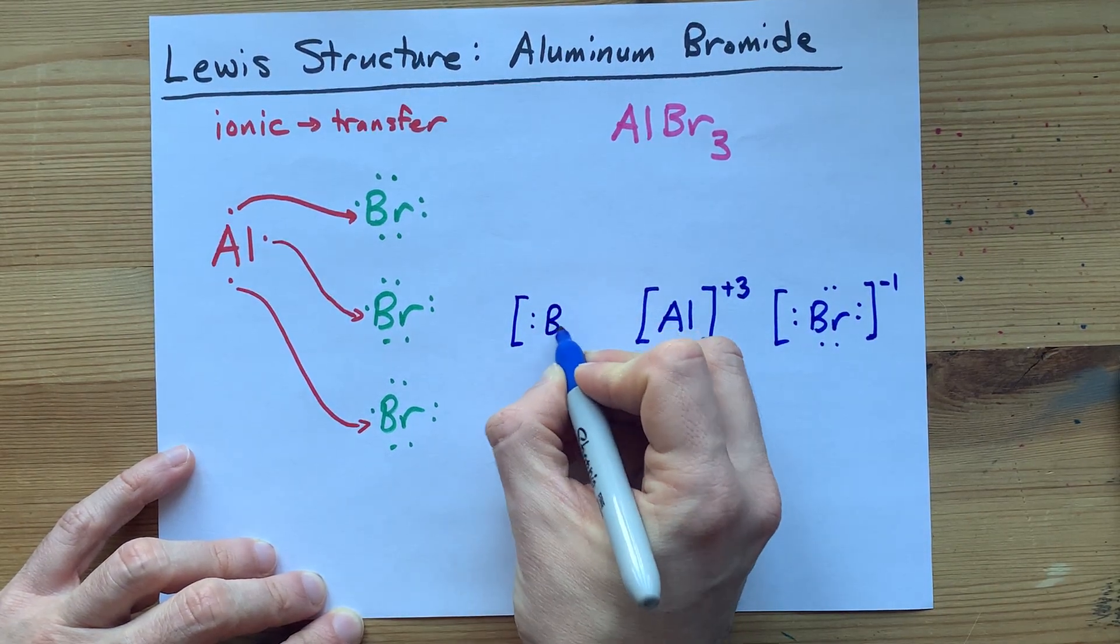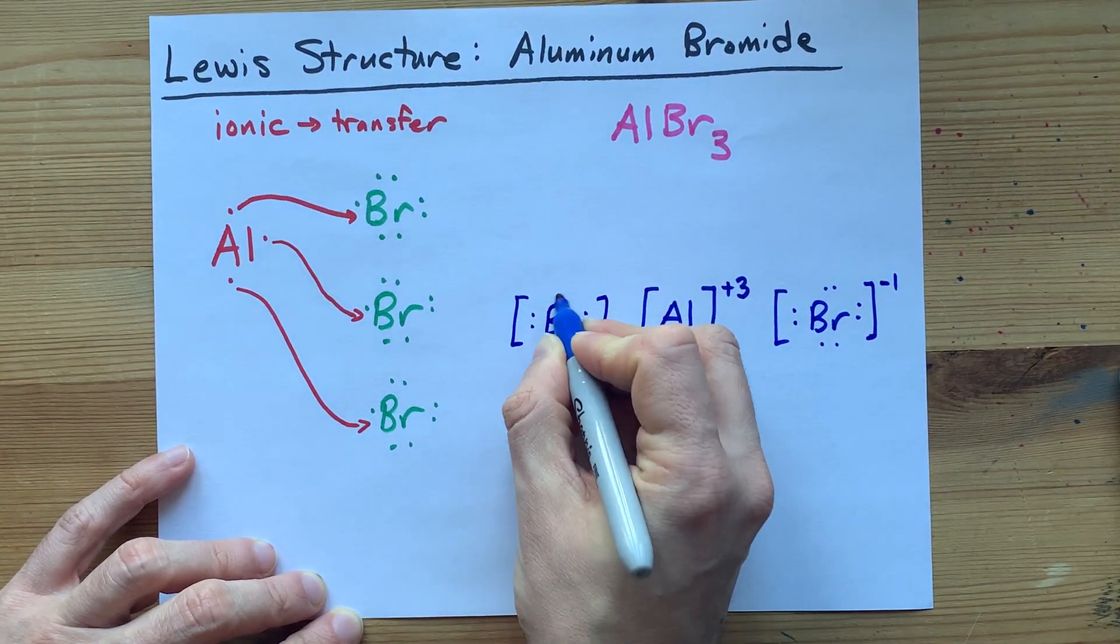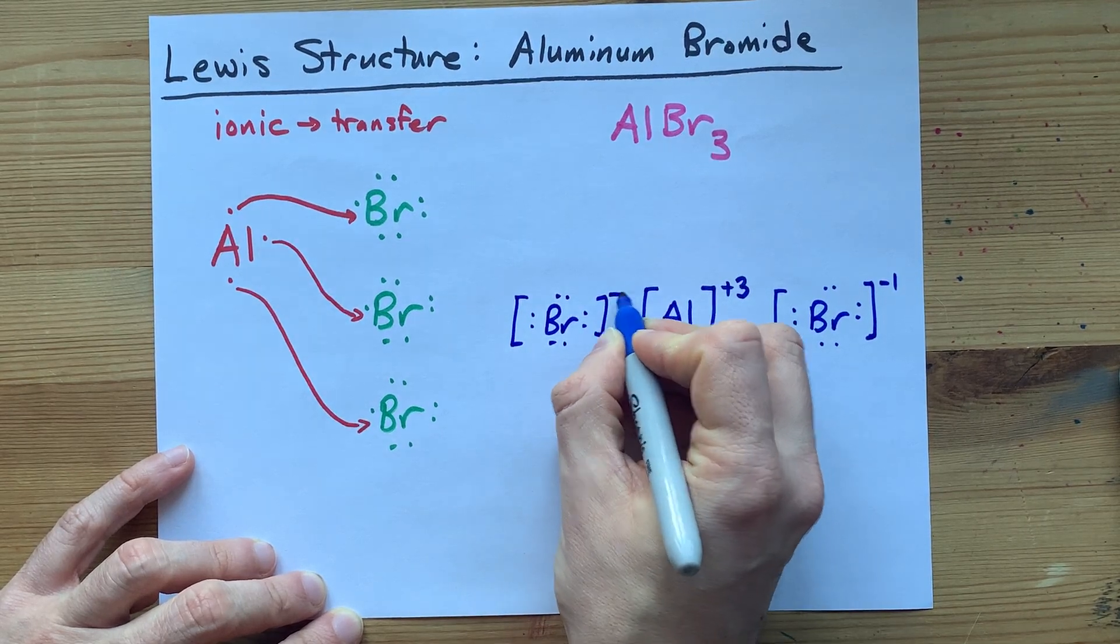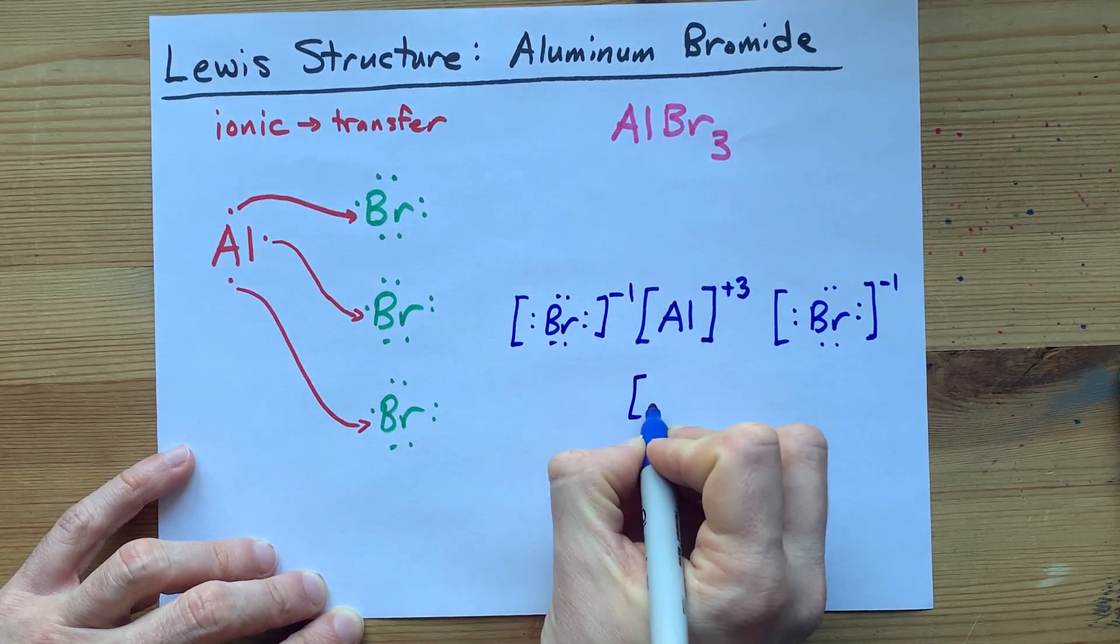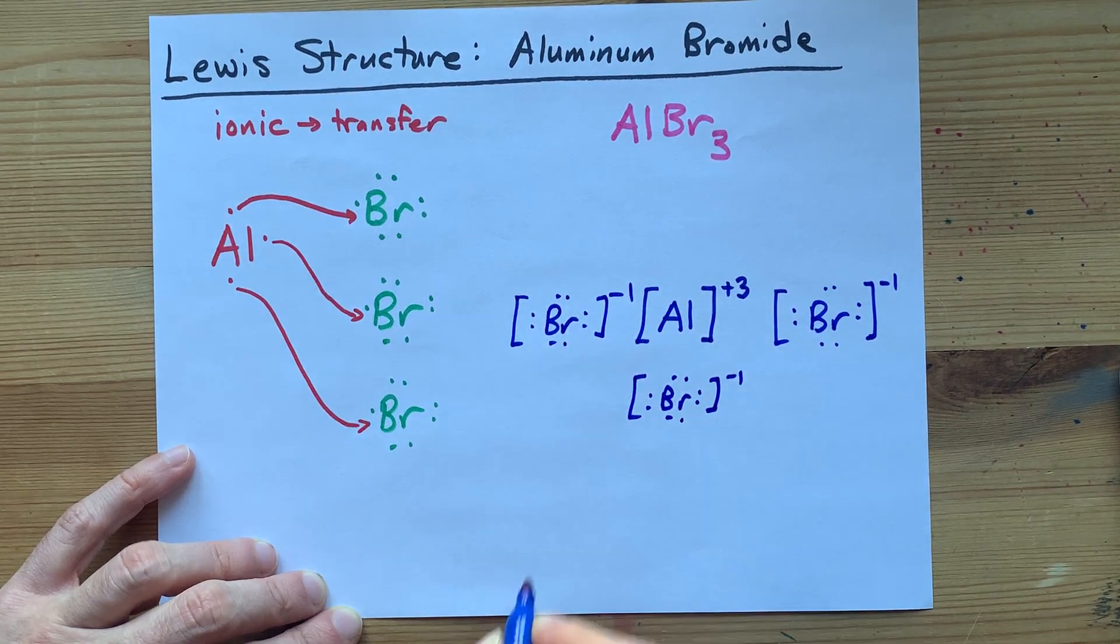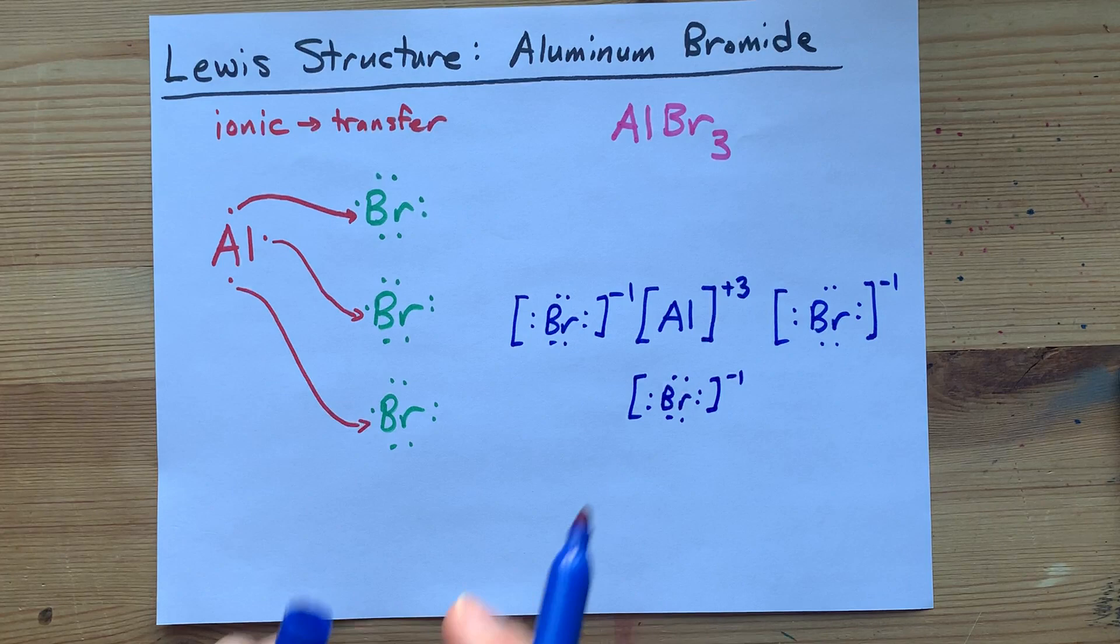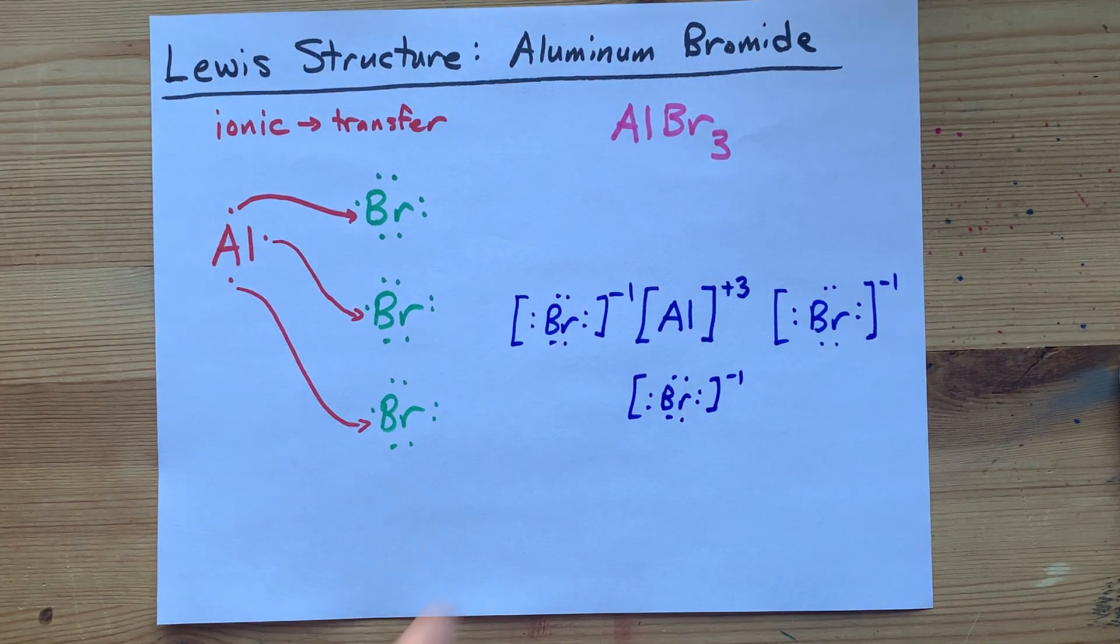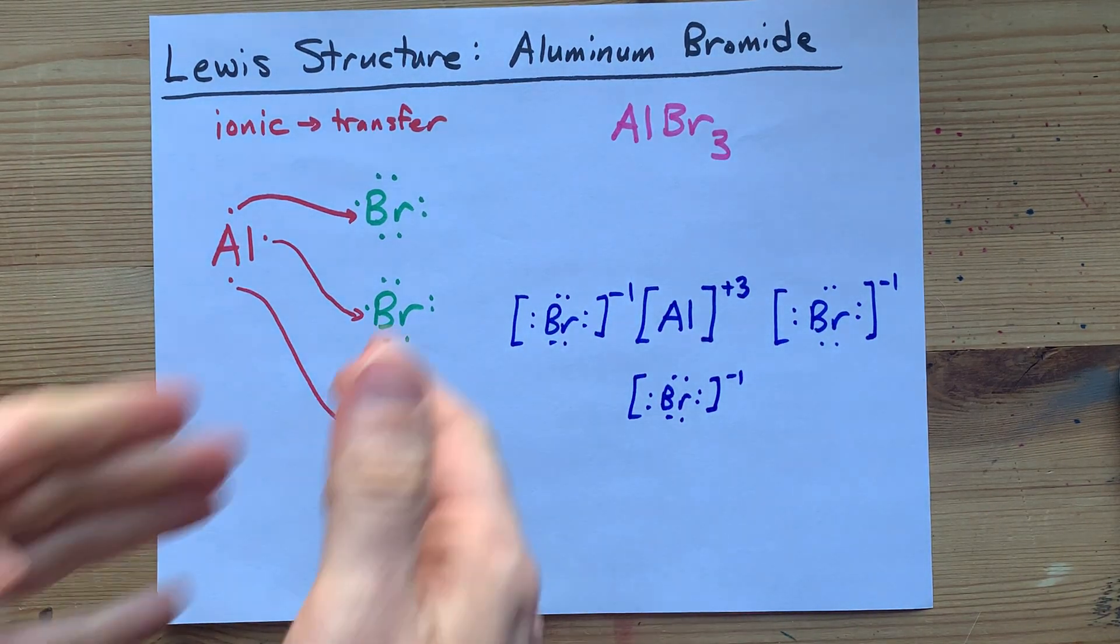And now, for completeness, I need to replicate that another 2 times. There's my second bromine. I'll put a third bromine in here with its minus 1 charge and 8 electrons. Beautiful. There is my finished Lewis structure. There's your finished Lewis structure.